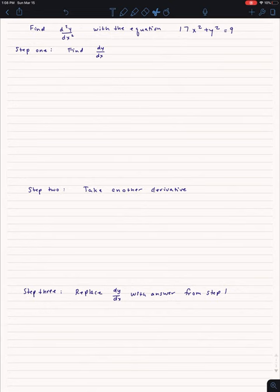The first thing we're going to do is find the first derivative. Then we're going to take a second derivative, and our final step will be when we have a first derivative after step 2, we're going to take what we found in step 1 and plug that in.